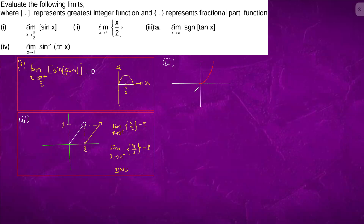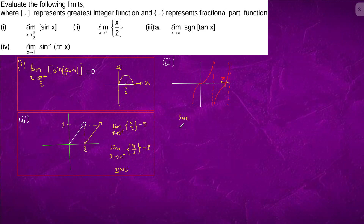tan x looks like this — and we have tan x like this. This is π. At π minus, tan x takes some negative value between −1 and 0, so the limit x tending to π minus of signum(tan x): the greatest integer of that negative value gives signum(−1) which equals −1.